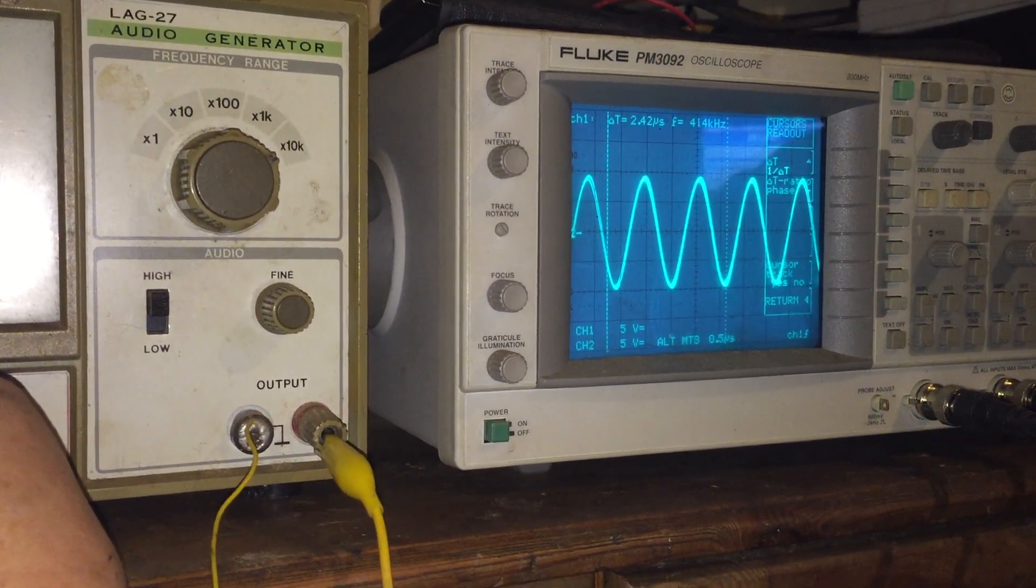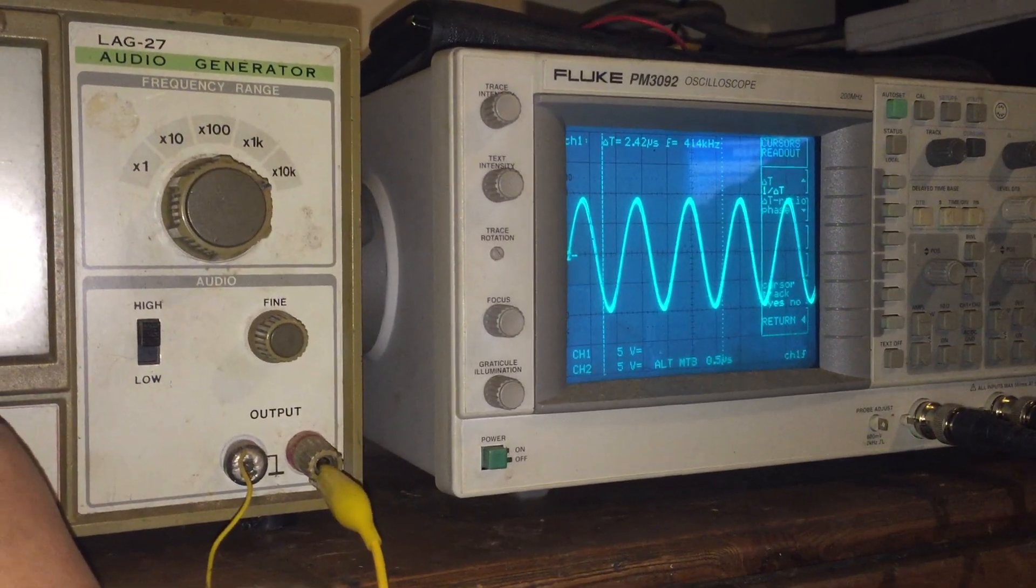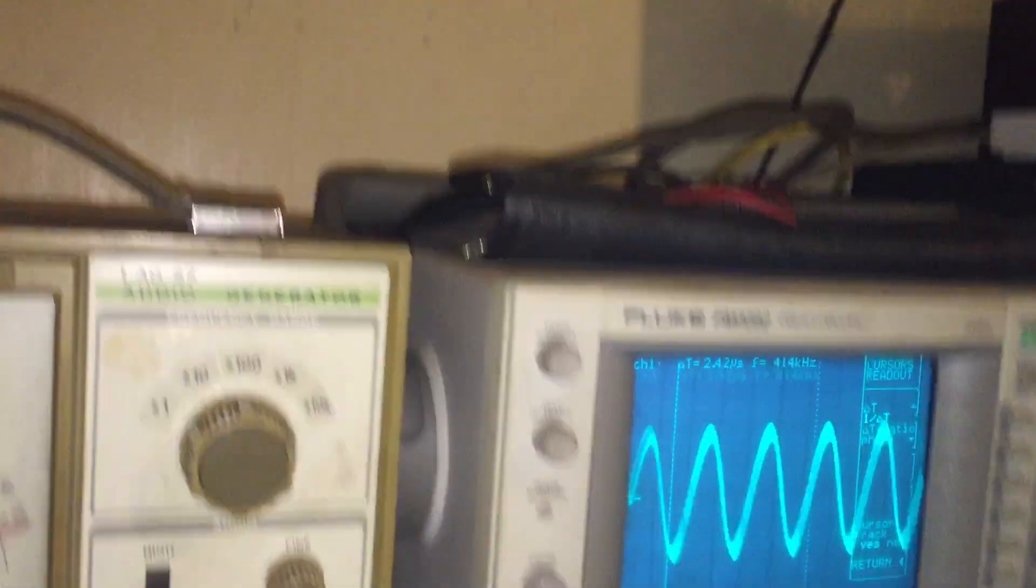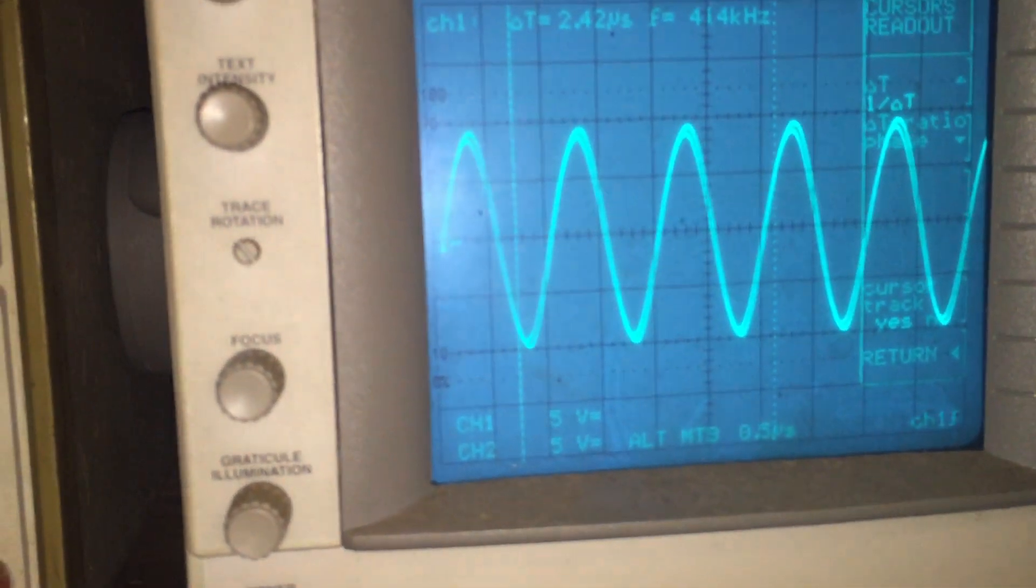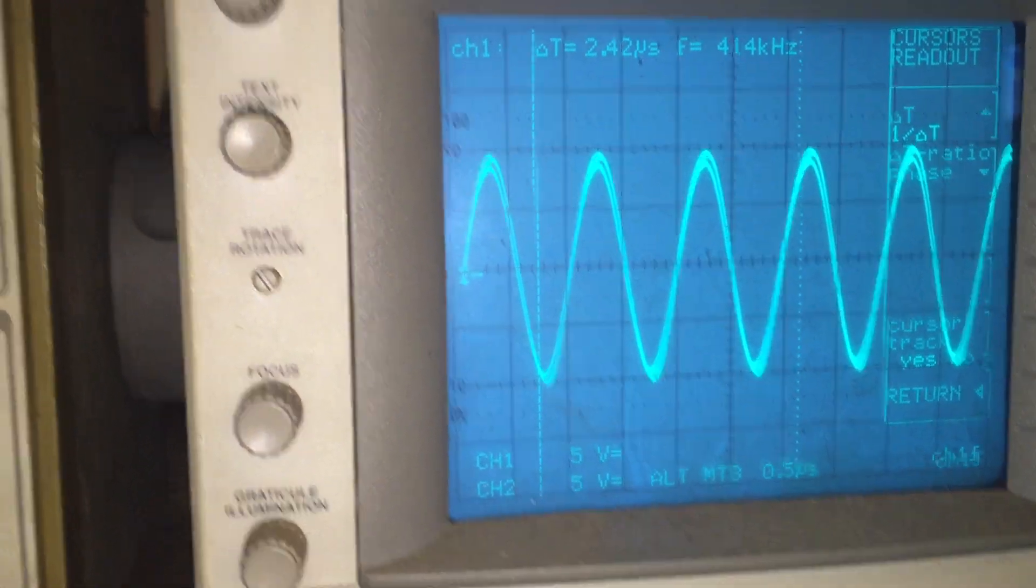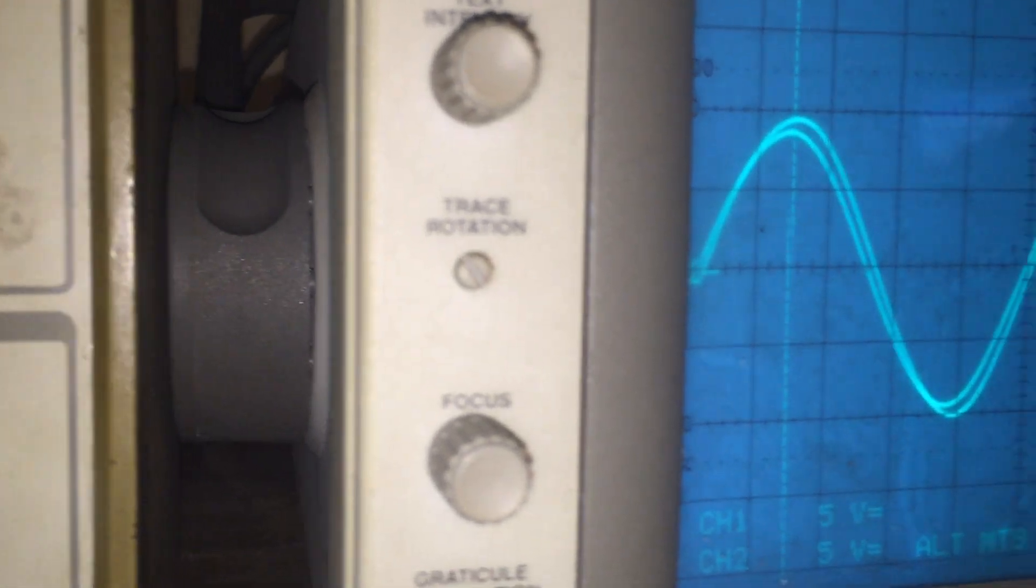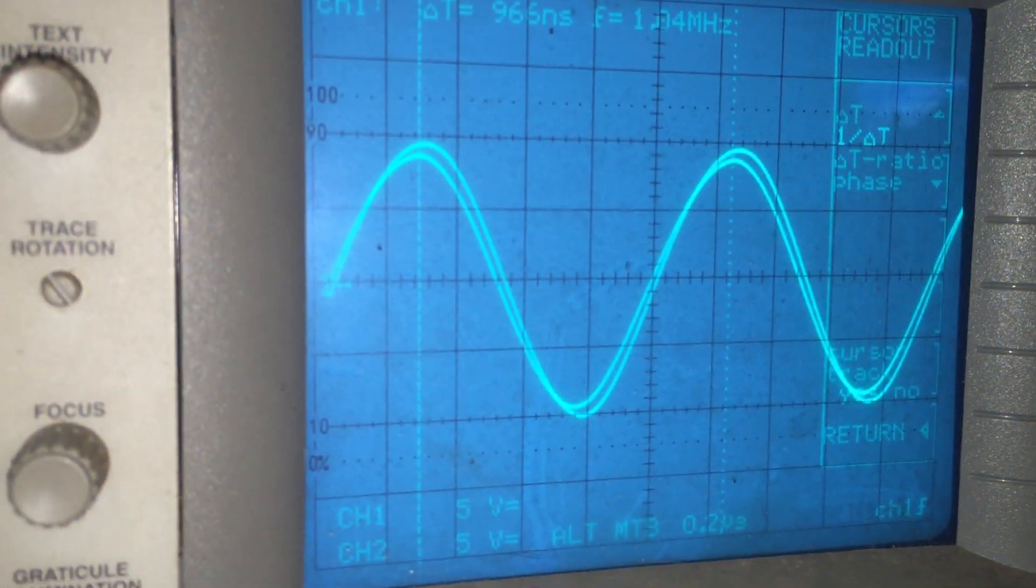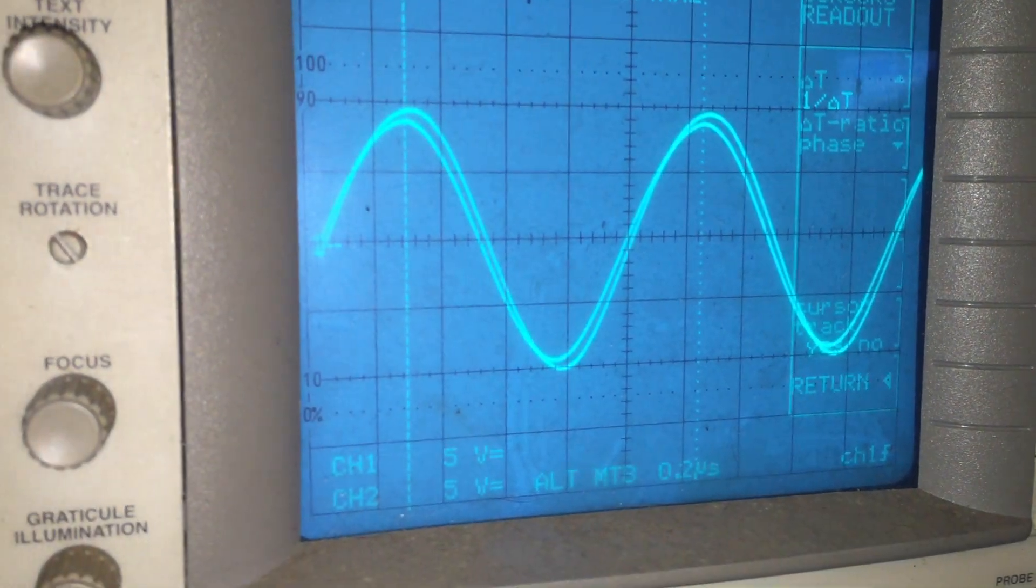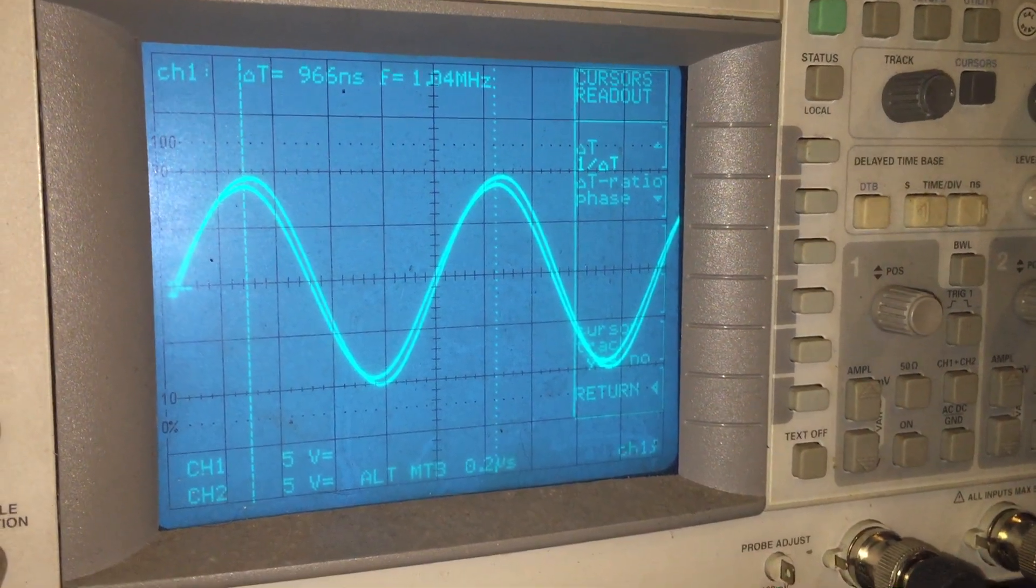We're coming up towards a meg, but can you see now that channel 2, the amplitude, is greater than channel 1? Now unfortunately this is why I couldn't pursue the experiment any further. That's it, that's my maximum frequency. Just expand that once and you can see, just set the cursors, 1.04 megahertz.